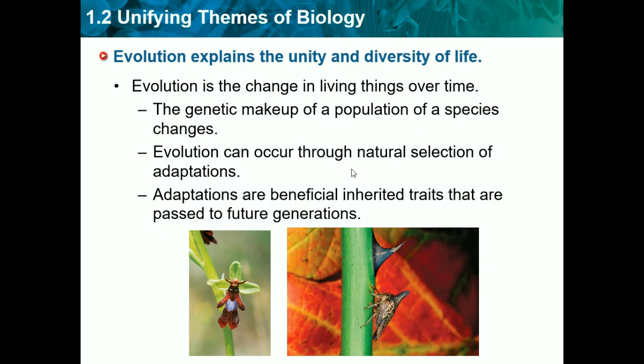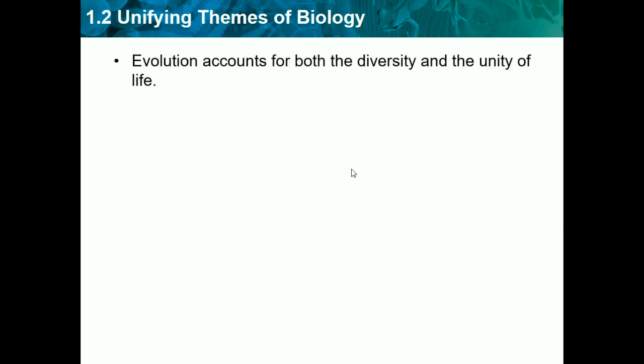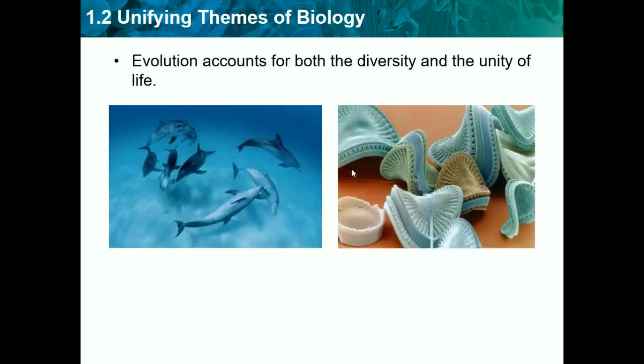This is another example — if you look at the picture on the right, that bug looks like a thorn, which took many millions of years to adapt into that way. Evolution accounts for both diversity and the unity of life. Evolution causes species to change and form into different-looking creatures, which causes diversity. For example, dolphins near Asia would look different than dolphins near Florida because they live in different temperature waters and would have to adapt differently to their environments.